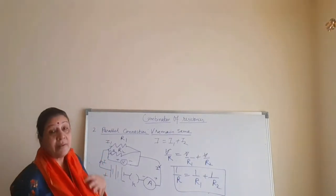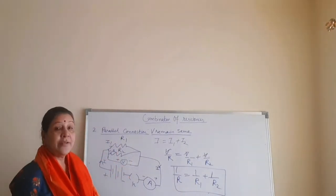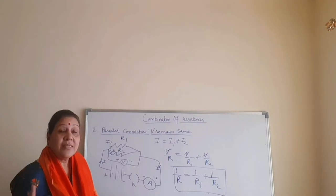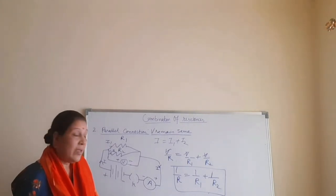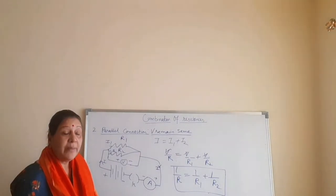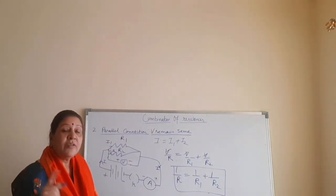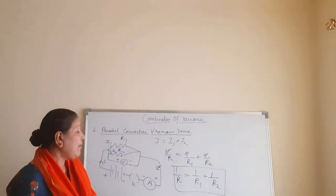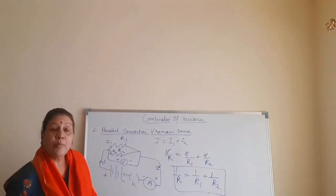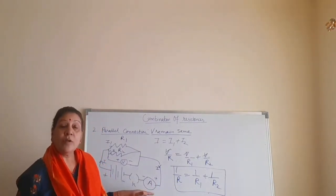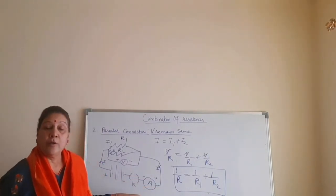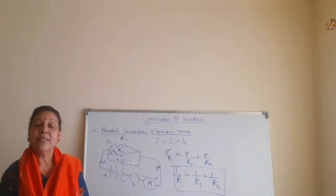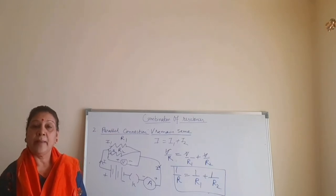The total resistance in parallel will be lesser than the individual resistances. We have covered the combination of resistances in series and parallel. In series, I remains the same; in parallel, V remains the same. The formula 1/R equals 1/R1 plus 1/R2 — that's all for the day. Numerical problems based on this will be discussed in the next class. Till then, stay safe, stay healthy, and a very big thank you to you all. Bye bye!